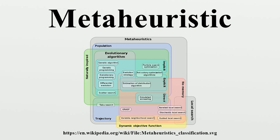1986 - First mention of the term meta-heuristic. 1989 - Moscato proposes memetic algorithms. 1992 - Dorigo introduces ant colony optimization in his Ph.D. thesis. 1995 - Wolpert and Macready prove the no-free-lunch theorems.